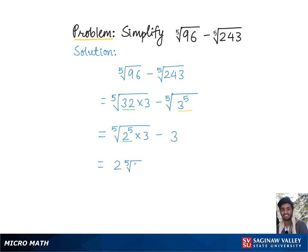Now we are left with 2 times the 5th root of 3 minus 3. Since we can't reduce this expression to a further simpler form, this is the final answer.